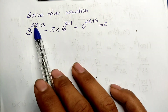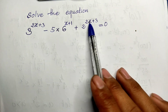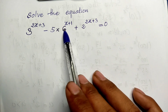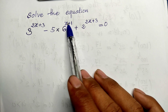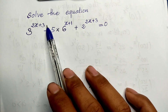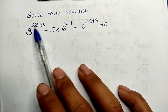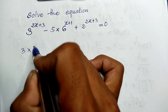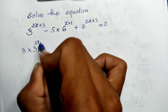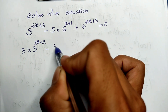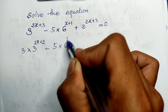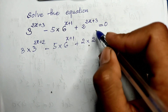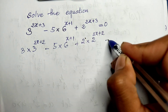Now you can see this 2x plus 3 appears in two terms, but the bases are different — and the exponents are also different. To solve this, you can use this trick: write 3 to the power of 2x plus 3 as 3 times 3 to the power of 2x, then minus 5 times 6 to the power of x plus 1, and plus 2 times 2 to the power of 2x, plus 2, equal 0.